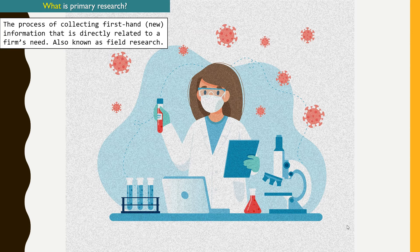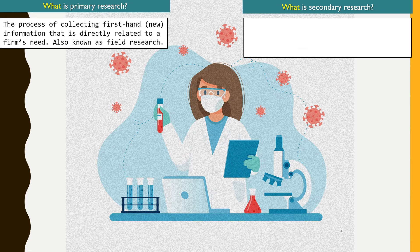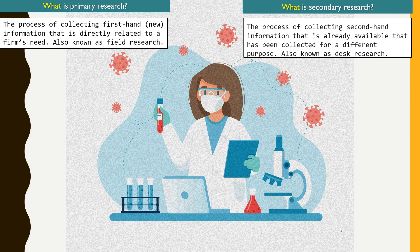Primary research is defined as the process of collecting first-hand, new information that is directly related to the firm's needs. We call this field research because you have to go out and find information. Secondary research, on the other hand, is also about collecting information, but second-hand information — you are looking at information that is already available.